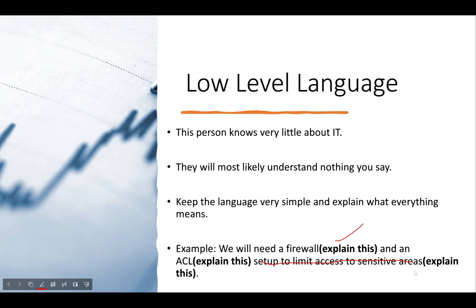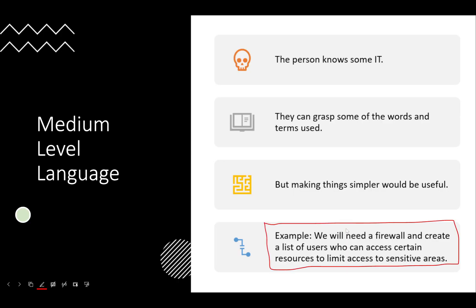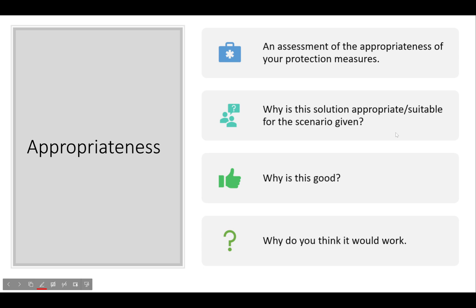Simply put: use words and phrases that will allow that specific person in the report to understand. In this case I believe it was a 2018 or 2019 paper — Baljinder Singh, an experienced IT user but not a specialist — so I would use medium level language. Also please note: use the protection measures directly from activity 2. You don't need to create new ones.